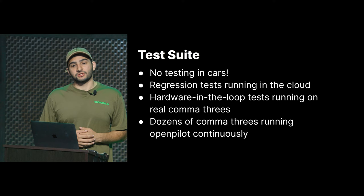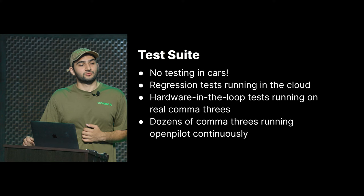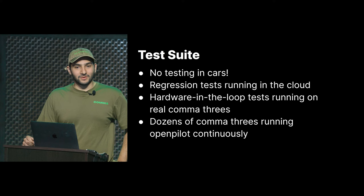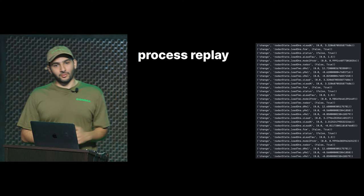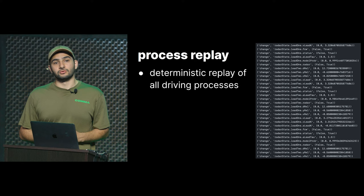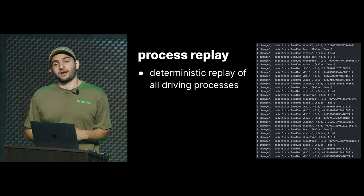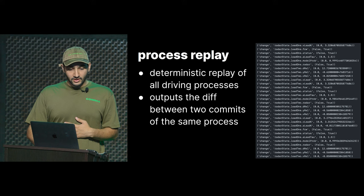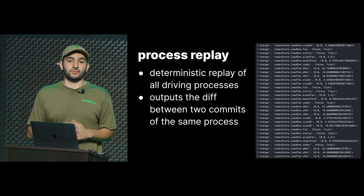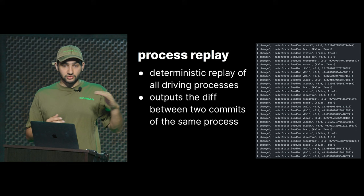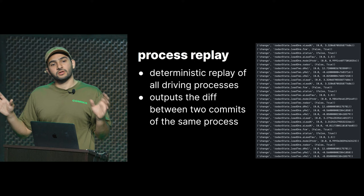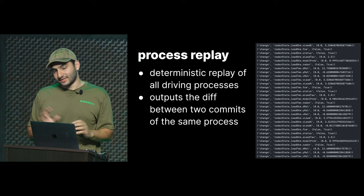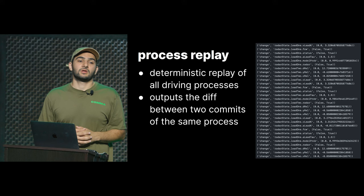I want to talk about one of our tests called Process Replay. It allows us to deterministically replay all of our driving processes. That means you take the driving model, give it the same video, and ask: what do the outputs look like? Do they look exactly the same for the same inputs? This outputs a diff in the process outputs given two commits. You have a good known commit — good known behavior — and you see the deviation from that. You get a green check mark if there's no difference, and if there are differences, it's easy to say this is an expected difference, or this isn't and I messed something up.